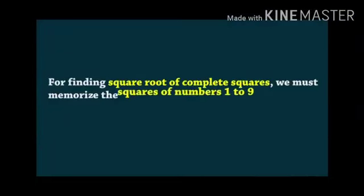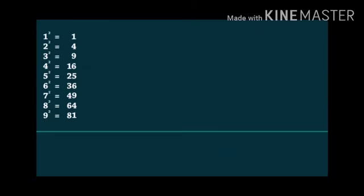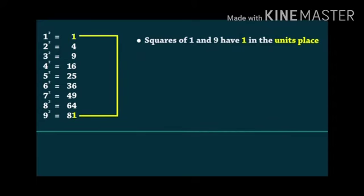For finding square root of perfect squares, we must memorize the squares of the first 9 numbers and check for the units place.